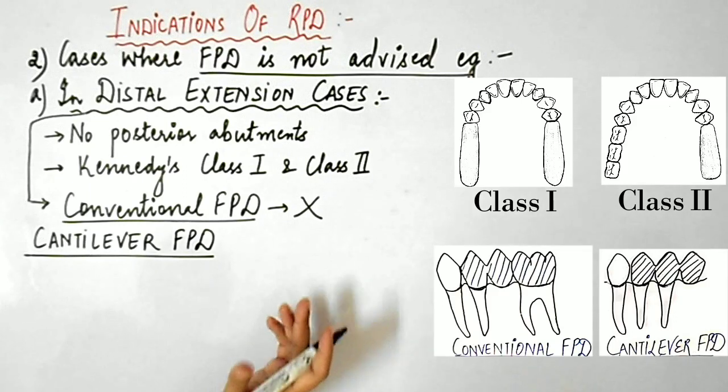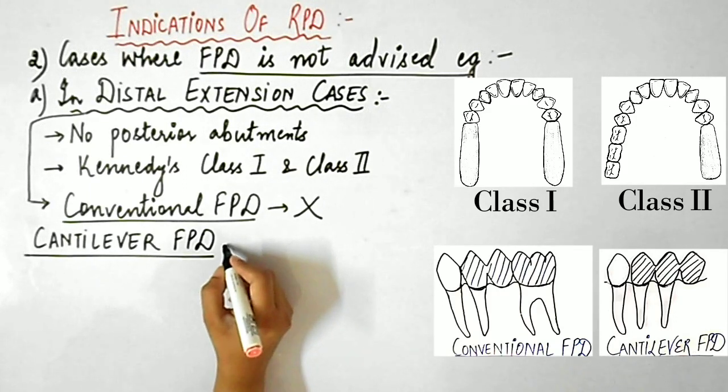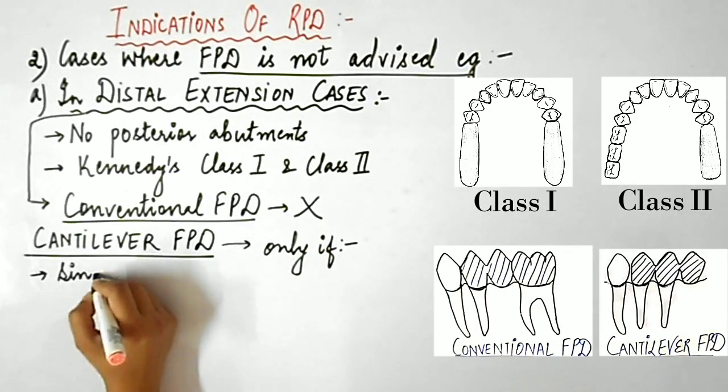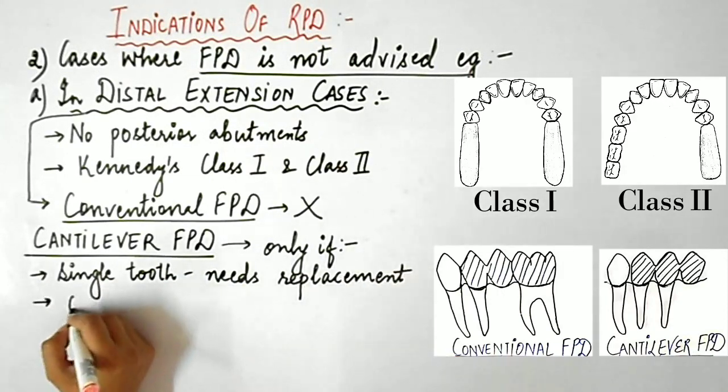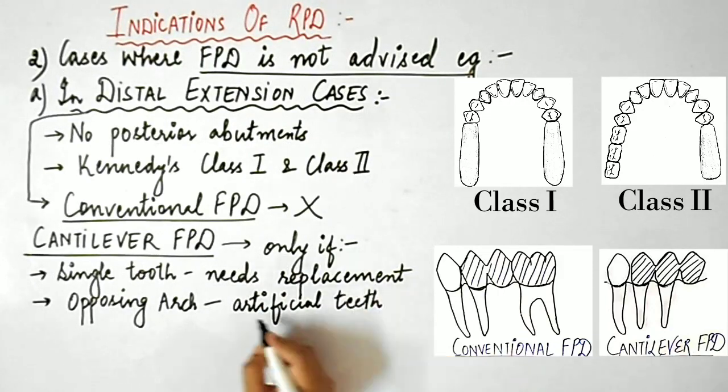In distal extension cases where there are no posterior abutments present, a cantilever FPD may be planned, but only if a single tooth is missing that needs replacement, or if the opposing arch contains artificial teeth which tend to exert lesser occlusal forces.